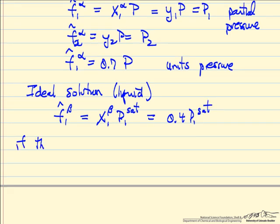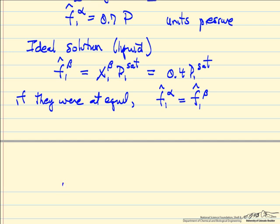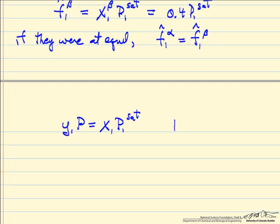If the system were at equilibrium, the fugacity of component one in the alpha phase would equal its fugacity in the beta phase. That means y₁ times the total pressure equals x₁ times the saturation pressure of component one. This is Raoult's Law, which assumes both an ideal solution and an ideal gas.